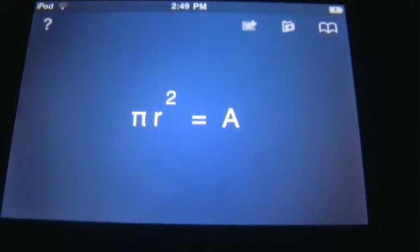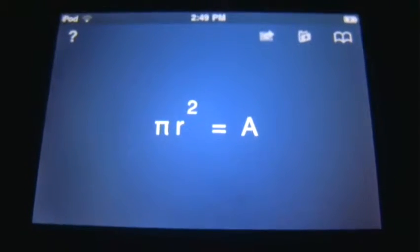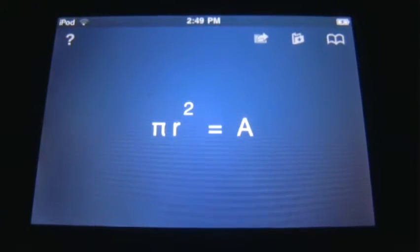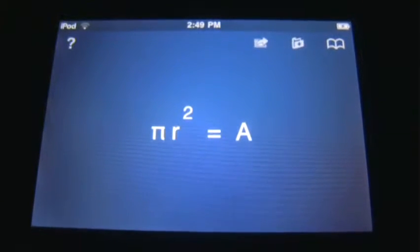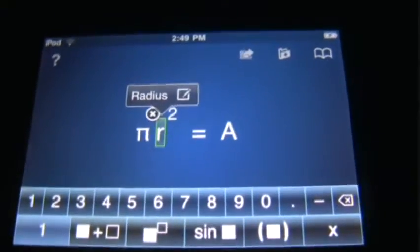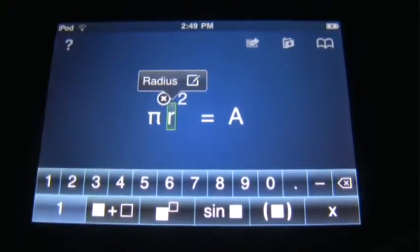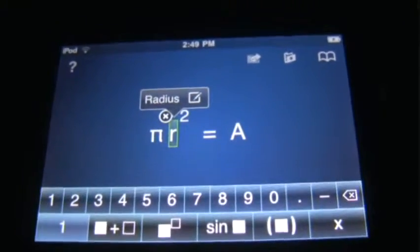And so if you wanted to, for example, modify this a bit. So you wanted to actually find a specific area of a circle, you could tap the R and you can also put labels on each of these pieces of the equation.